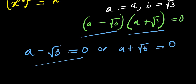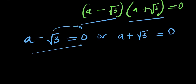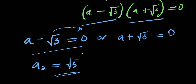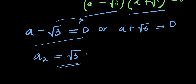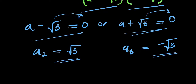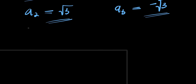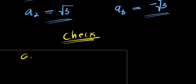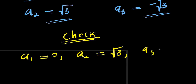For the first factor, taking root 3 to the other side it becomes positive, giving us a₂ equals root 3. We already have a₁ equals 0. For the second factor, taking positive root 3 to the other side it becomes negative, giving us a₃ equals negative root 3. Now we will check all three values of a.